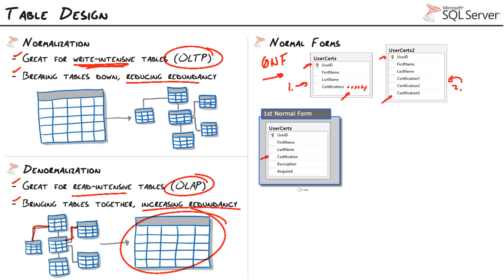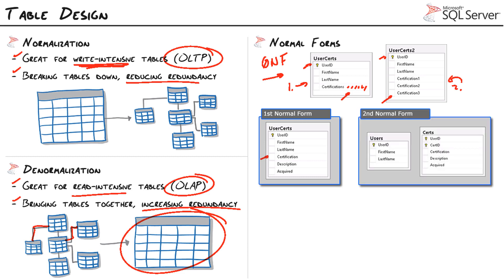We do meet the primary key requirement, but to get truly into first normal form we need to redesign the table. We'll make a user-cert table: it has a primary key, each column is listed only once rather than multiple times, and we're not comma-delimiting. This meets first normal form, but we still have some data redundancy because if a user has multiple certifications they'll have multiple records. Second normal form states that there must not be any partial dependence of any column on the primary key.